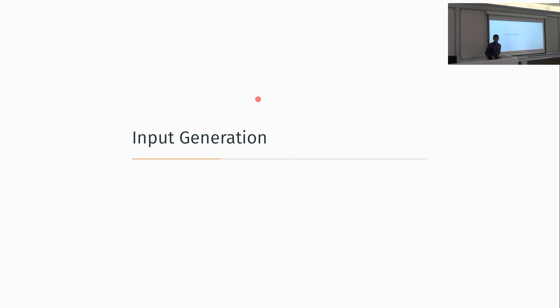How do you get your inputs? The first thing is probably to use your favorite molecule structure editor to get your structure. CP2K supports XYZ files, but it supports them only for loading coordinates — connectivity information which might be present gets ignored. So it's not the same as the internal COORD section where you can specify connectivity. If you need that, you have to go to PDB or CIF files, from which connectivity information should be parsed and available inside CP2K. The restart files contain the coordinates parsed from those files as in the COORD section.